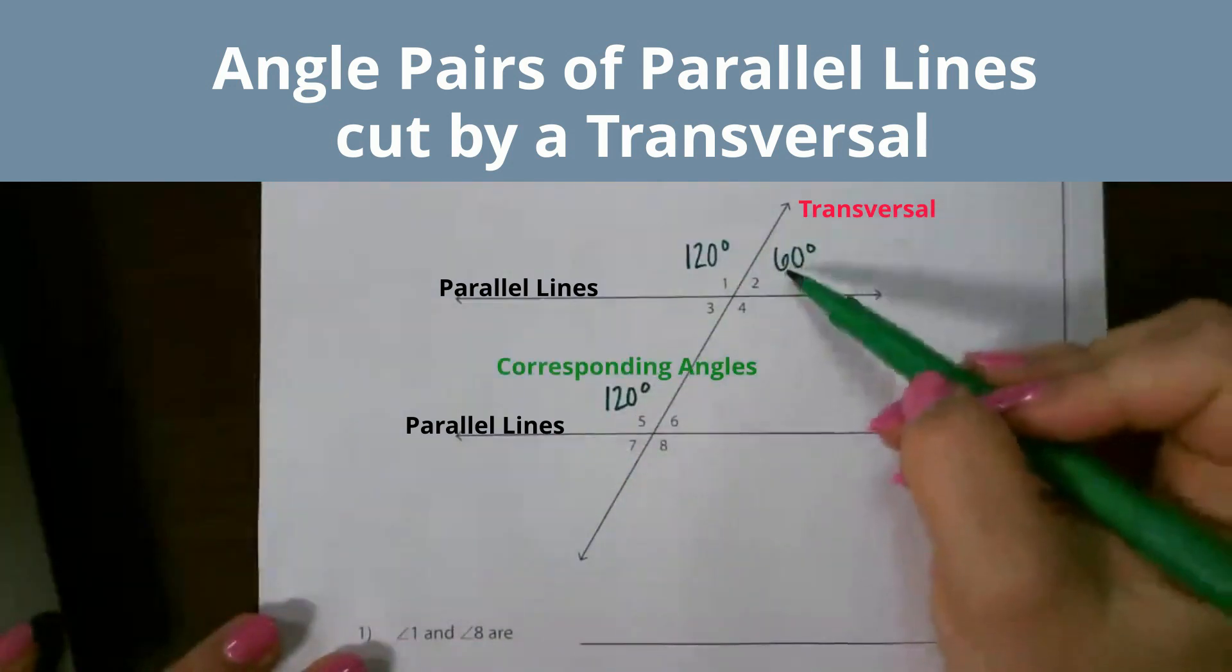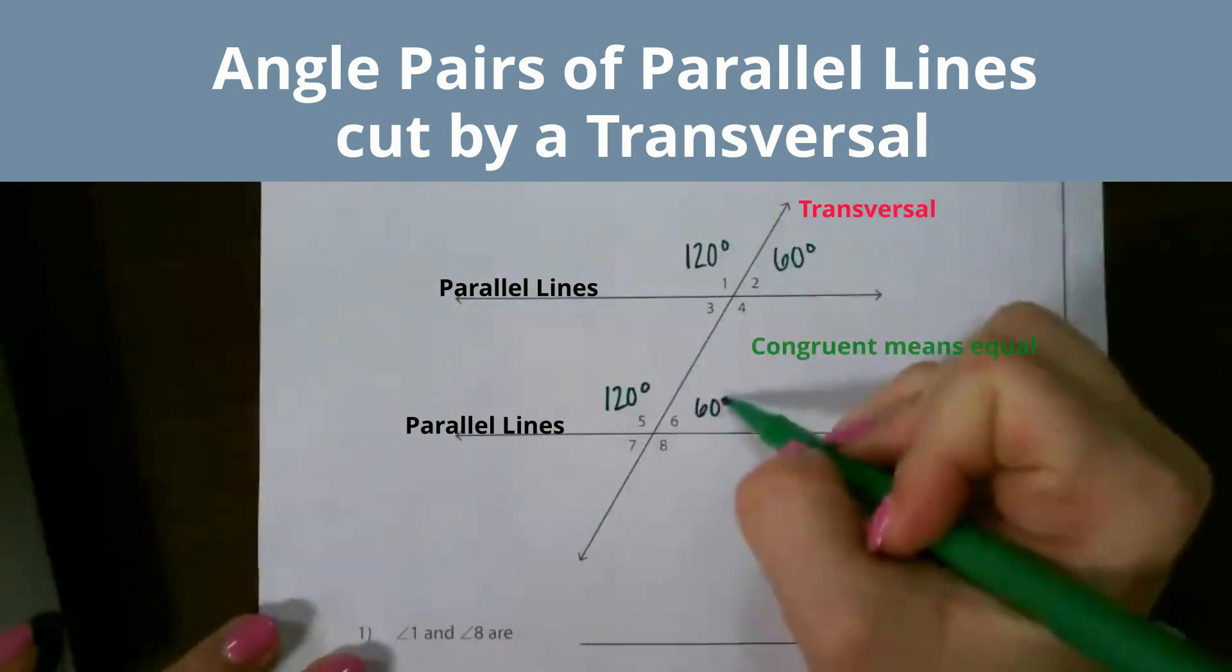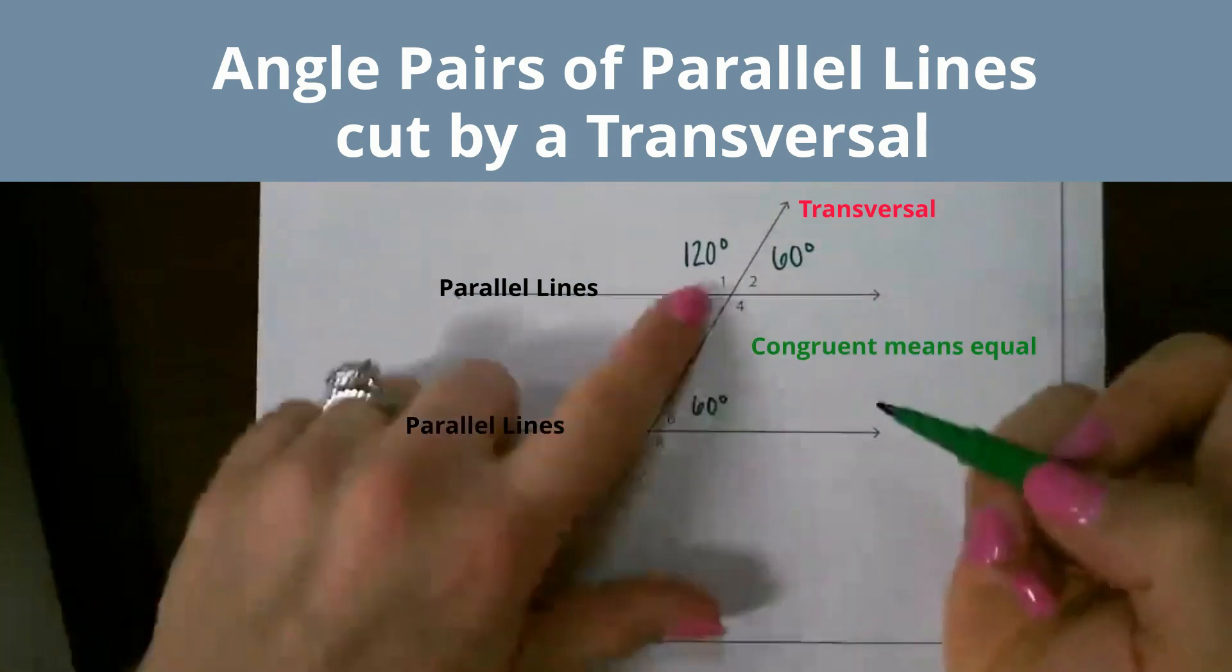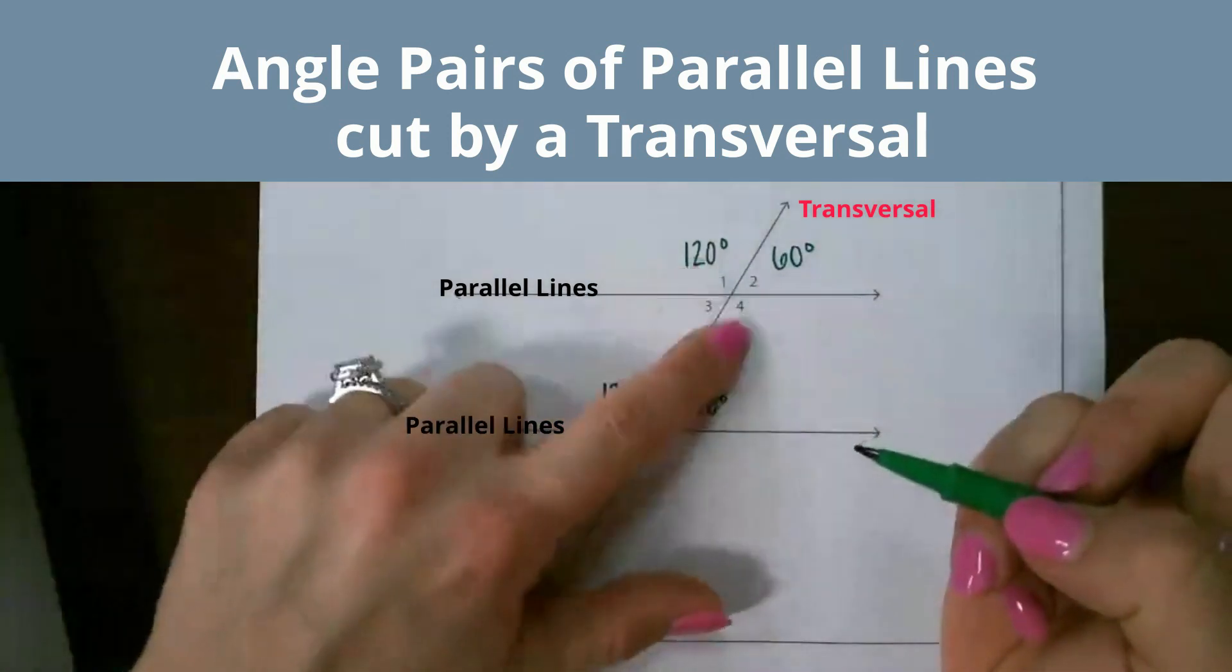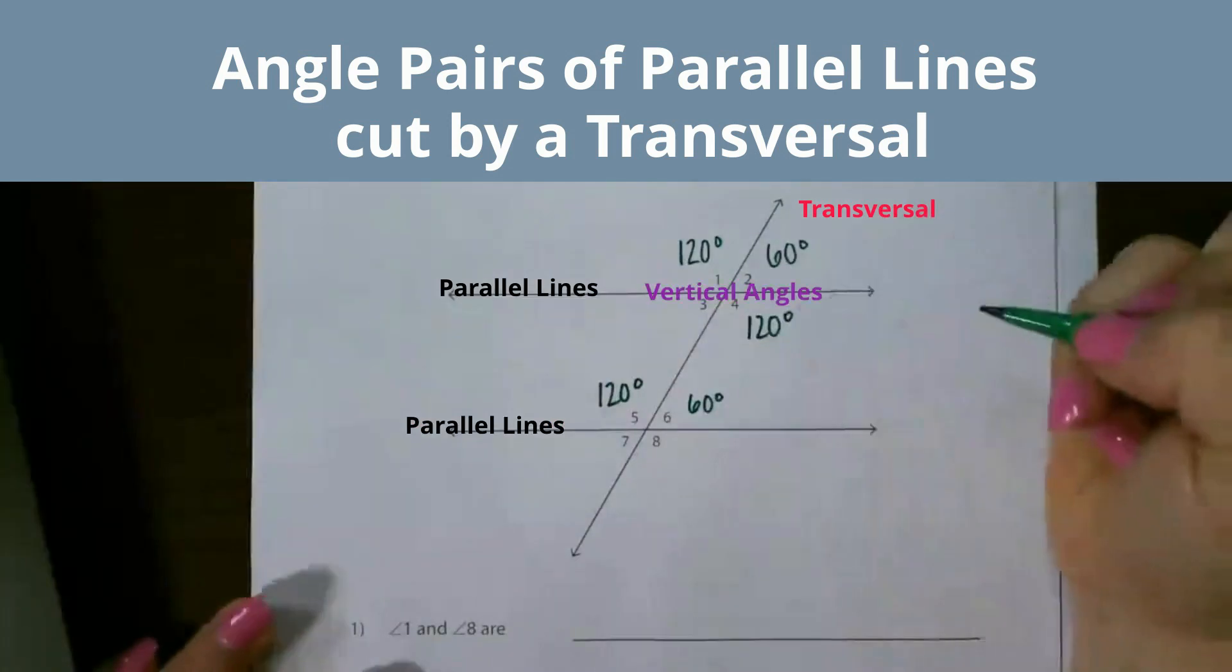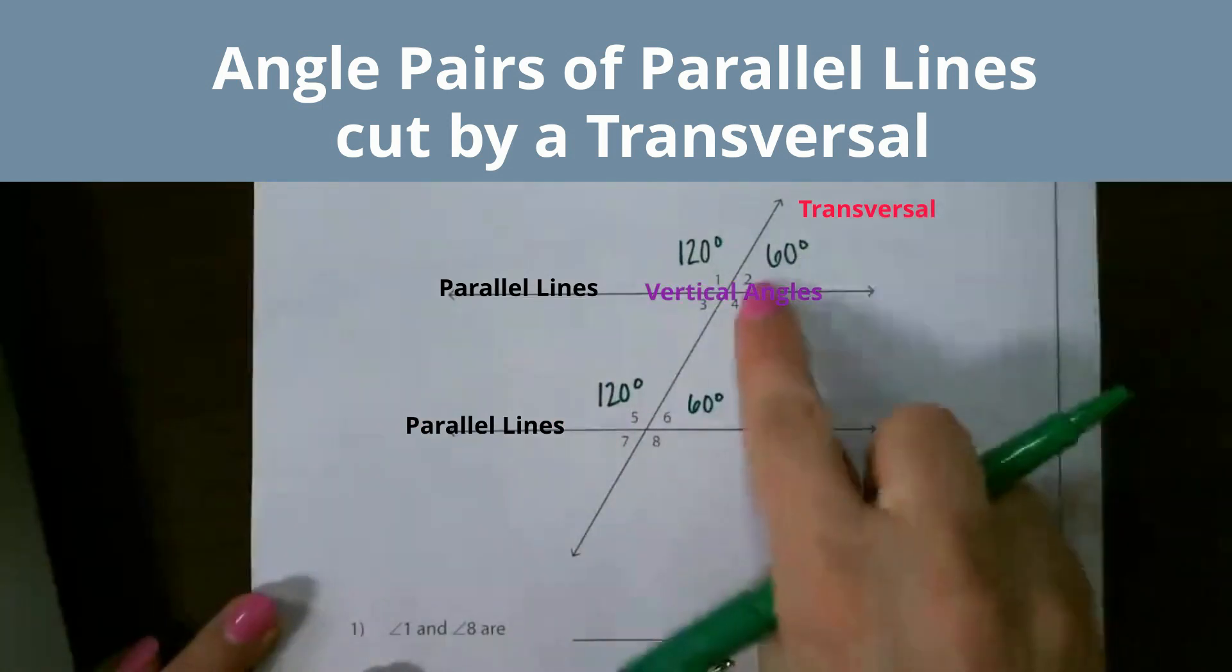Remember that 1 and 4, any angles that are directly across from each other, are congruent. They are called vertical angles, which means that 2 and 3 are also vertical angles.